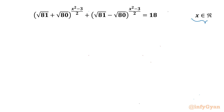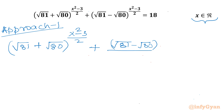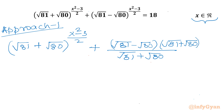I will be sharing two approaches to proceed with this question. Approach number 1: I will write √(81) + √(80), whole power (x²-3)/2, plus √(81) - √(80), whole power (x²-3)/2. Now I will rationalize the numerator √81 + √80. Multiplying accordingly, RHS is 18.